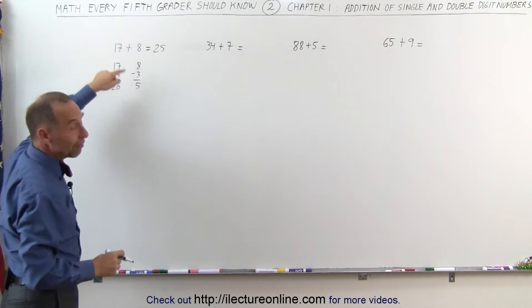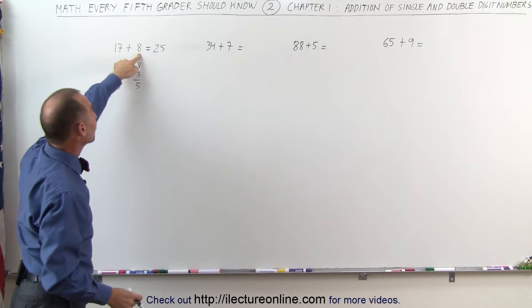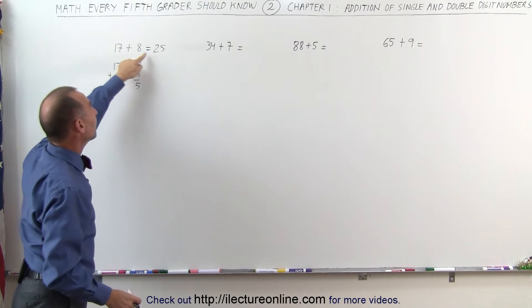You could simply look at this after a little bit of practice, and you say, okay, 17 plus 3 is 20. If I take 3 away from 8, I get 5. 20 plus 5 is 25.